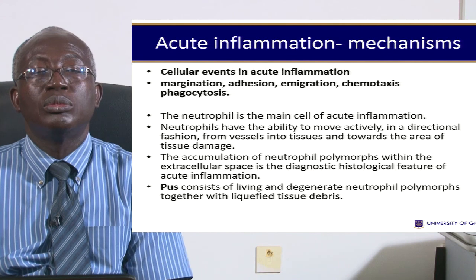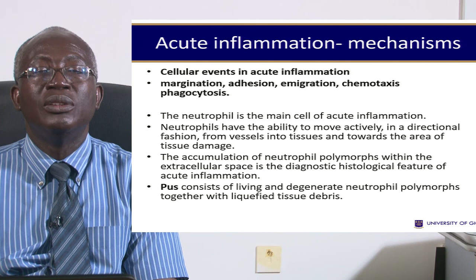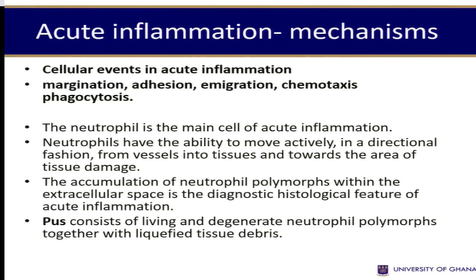Now let's move on to the cellular events: margination, adhesion, emigration, chemotaxis, and phagocytosis. In acute inflammation, the main cell is the neutrophil. When it collects, it forms pus, which consists of living and degenerate neutrophils together with liquefied tissue debris.